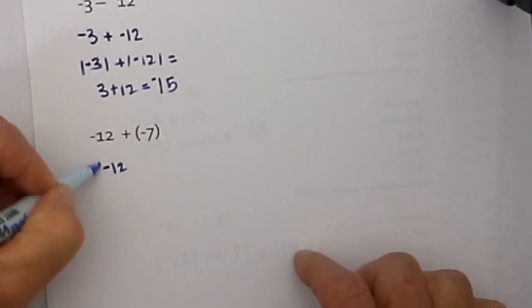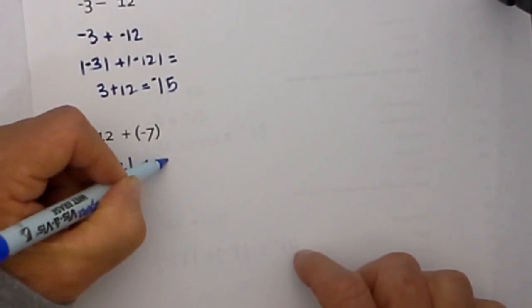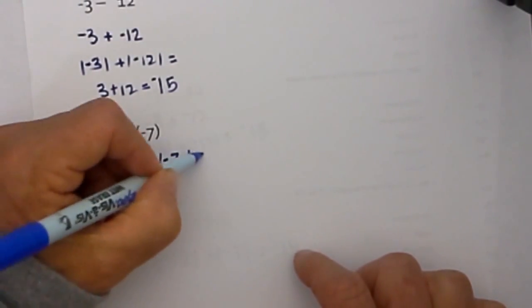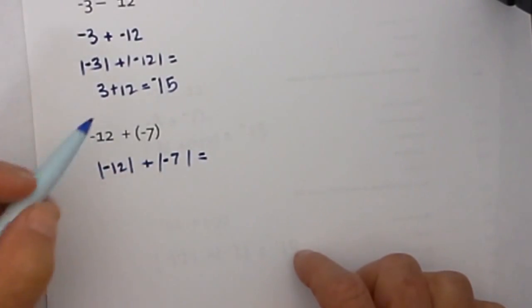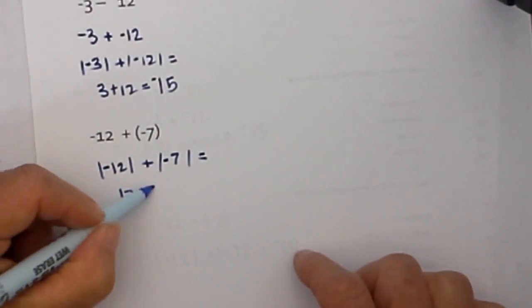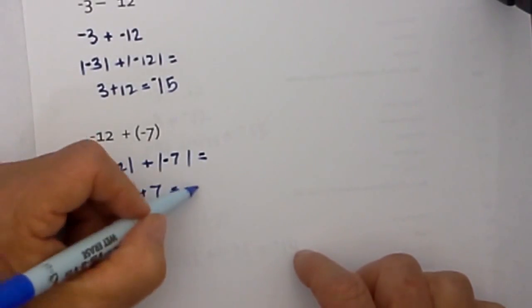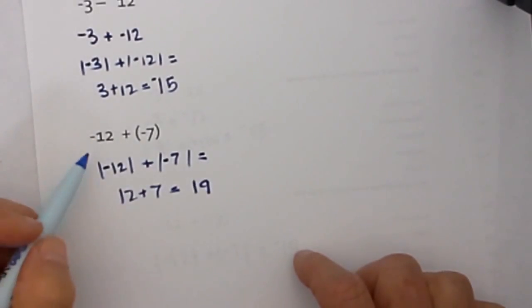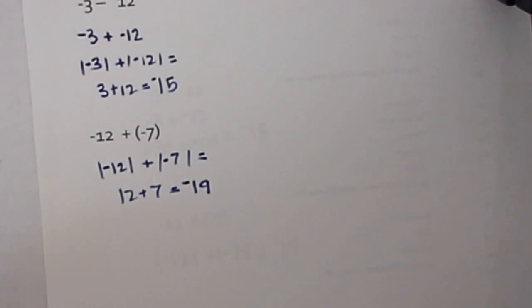So it will be the absolute value of 12 plus the absolute value of 7, which is equal to 12 plus 7, which is equal to 19. And then you take the sign of the two numbers which is negative. So it will be negative 19.